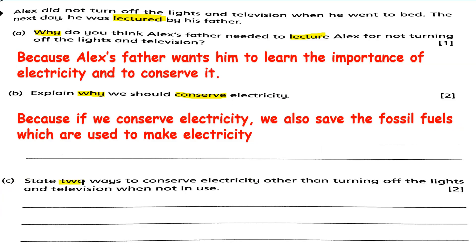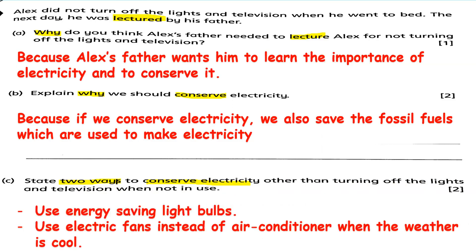Letter C: State 2 ways to conserve electricity other than turning off the lights and television when not in use. Number 1: use energy-saving light bulbs. Number 2: use electric fans instead of an air conditioner when the weather is cool. If you don't feel hot, do not use your air conditioner — use an electric fan instead, as that conserves electricity.